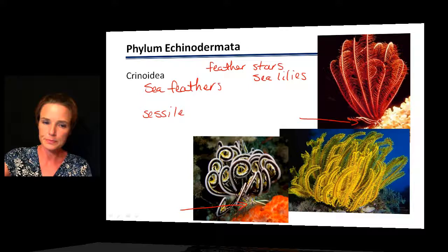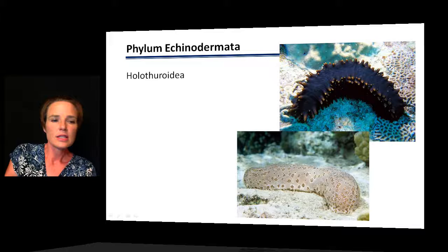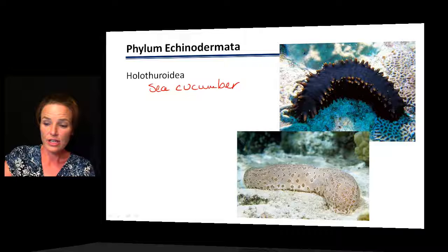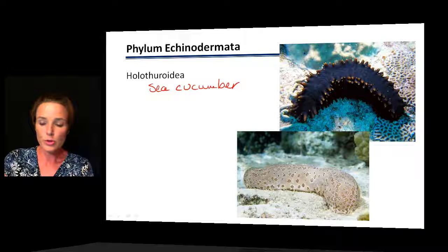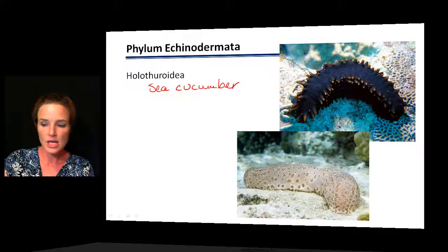The last group is a very unusual one: the sea cucumber. It is a very long, somewhat fat-looking organism. It has a reduced endoskeleton, so it's not hard on the outside like other groups, and it doesn't have the spines some groups have. However, it does have tube feet on the bottom, which places it firmly in this phylum, and its membership in the group has also been confirmed by molecular evidence.